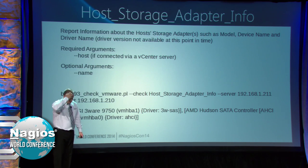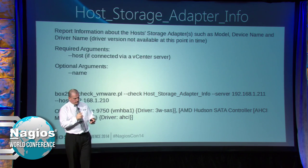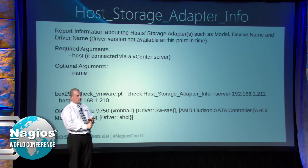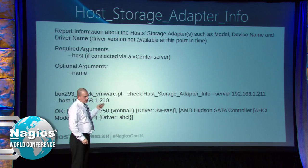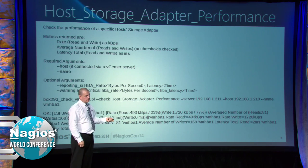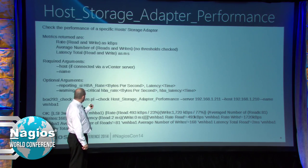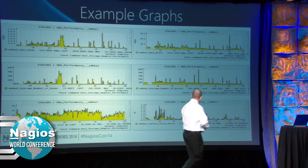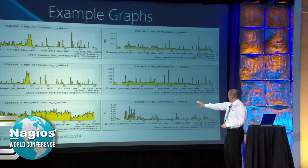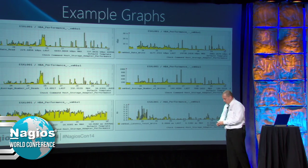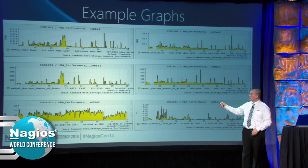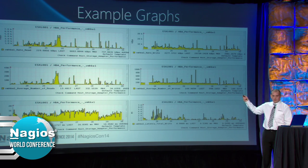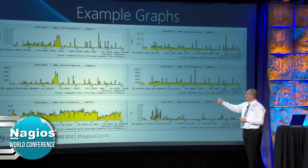Host storage adapter info - this could be a physical SAS card that has your physical disks connected to it, or an iSCSI adapter connecting to NICs. So you can get information about what it is. And the other check is performance about that storage adapter - read and write rates, number of reads and writes, and latency reads and writes. You can see a jump here in the graphs that I had on my data store as well - there's a pattern forming in the data.